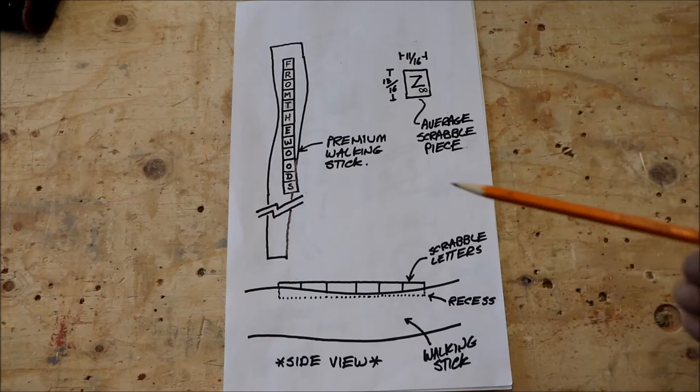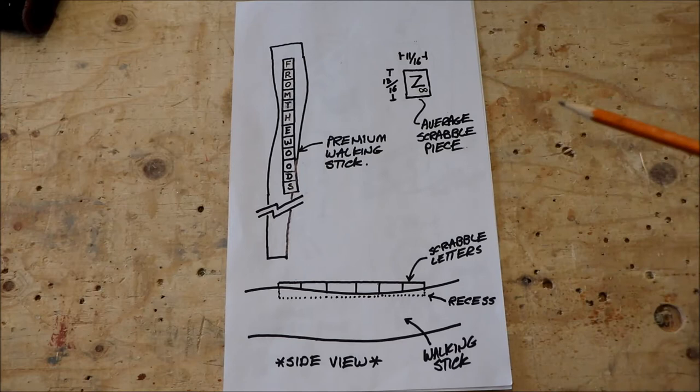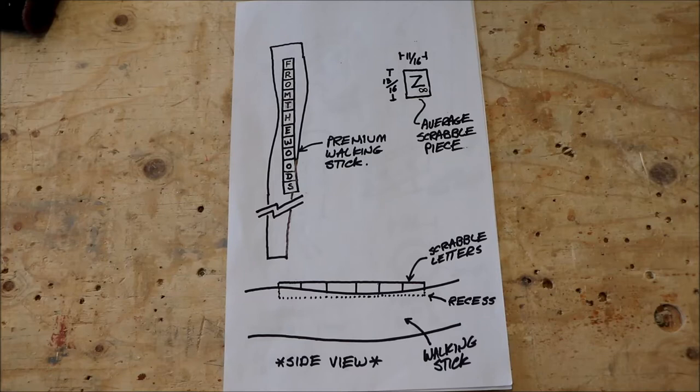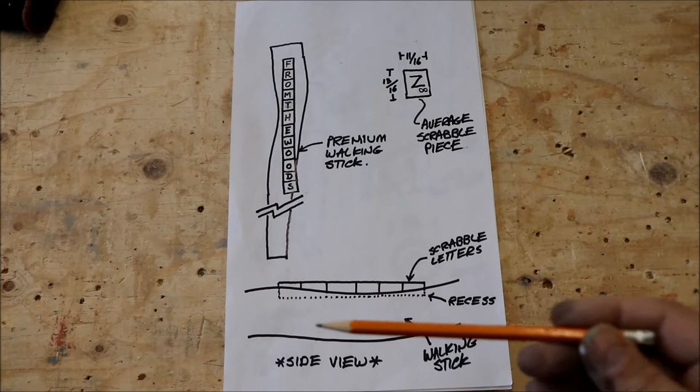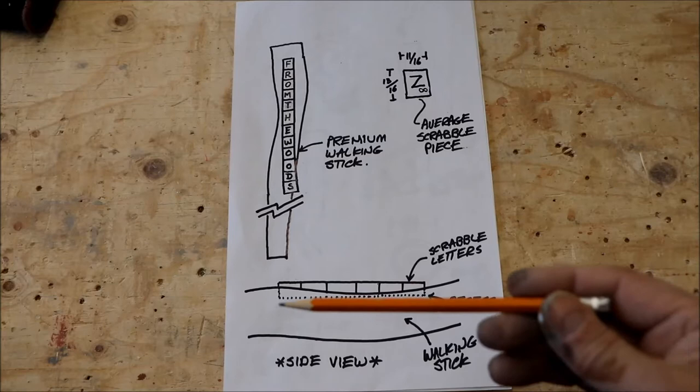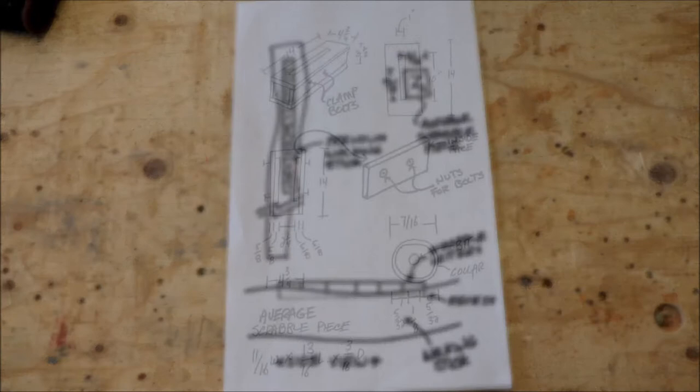The idea behind the project is we want to personalize our walking sticks by placing Scrabble letters on them. We have to make a recess groove to accept the letters, but all the walking sticks are organic in shape and different sizes and textures. We have to find a way to get all the Scrabble letters to lay flat. Because all the walking sticks are different in shape, we want to be able to have a flat surface to receive the Scrabble letters. So we'll need a jig to do that.